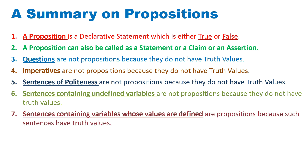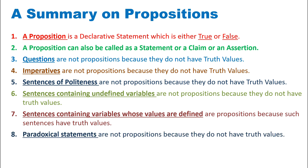But sentences containing variables whose values are defined are propositions, because such sentences have truth values. Paradoxical statements are not propositions because they do not have truth values.